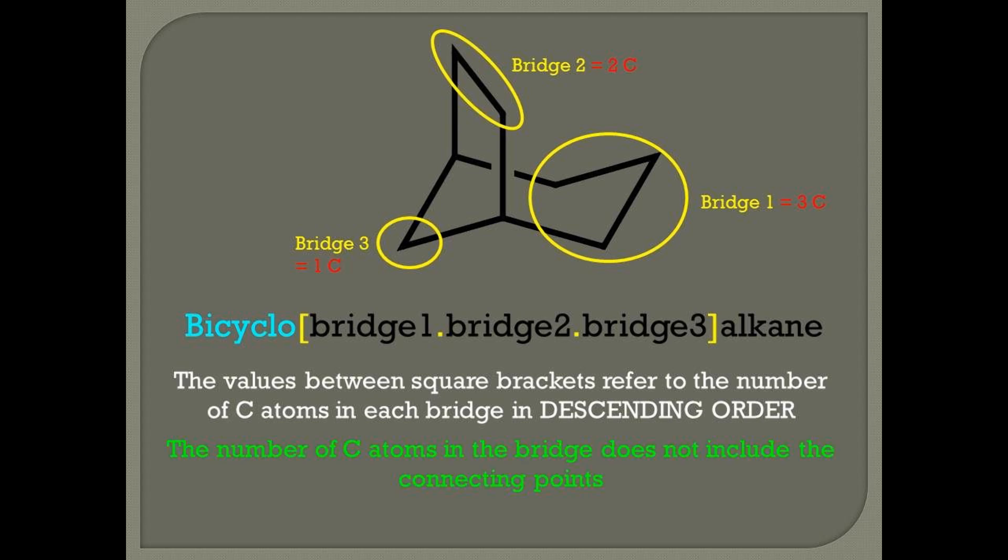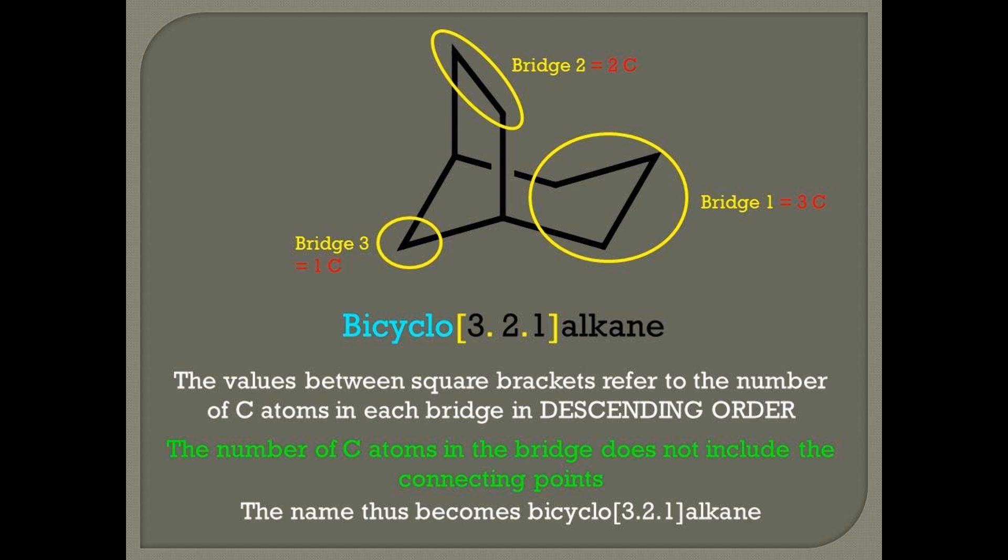The values between the square brackets refer to the number of carbon atoms in each bridge, in descending order, which does not include the connecting points. The name thus becomes bicyclo[3.2.1]alkane.